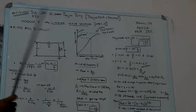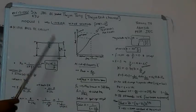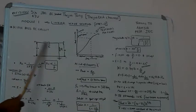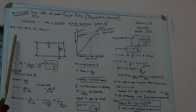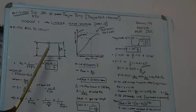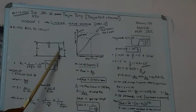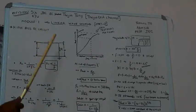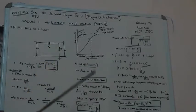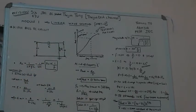Here we are dealing with a high pass RC circuit. This is the circuit diagram of a high pass RC circuit. We give input here, and the output is taken across the resistor. In a high pass circuit, output is taken across the resistor. In low pass, it is taken across the capacitor.